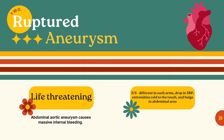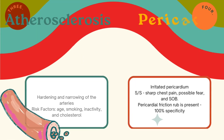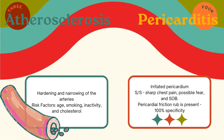Next we have atherosclerosis, which is hardening and narrowing of the arteries. Risk factors include age, smoking, inactivity, and cholesterol. Then we have pericarditis, which is irritation of the pericardium. Signs and symptoms include sharp chest pain, possible fever and shortness of breath, and a pericardial friction rub is present.